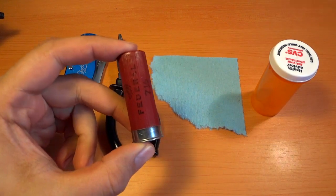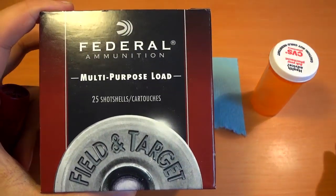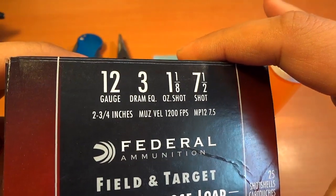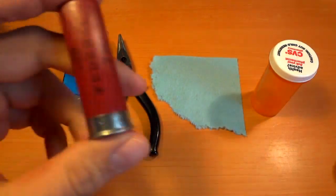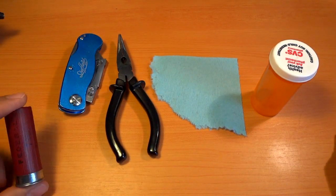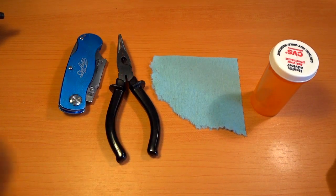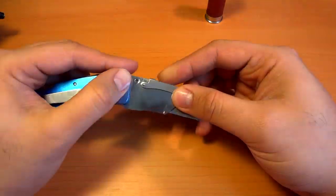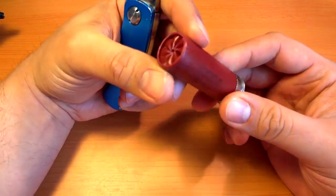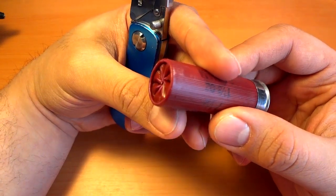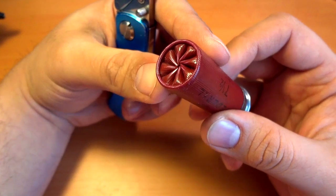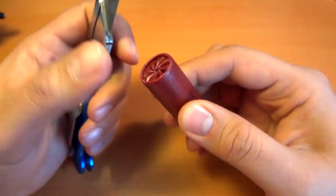These are the cheap federal stuff that I get from Walmart, the field and target loads, 12 gauge, seven and a half shot. First thing you want to do is we want to open up our shell. Now, this is very dangerous. If you don't know what you're doing, don't do it. This video is only for people who have experience with this before. This is very, very dangerous. Don't try that.